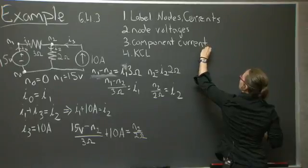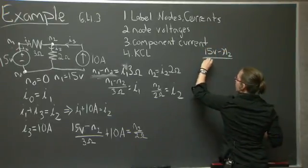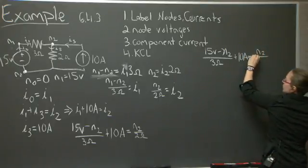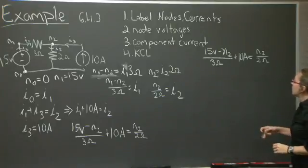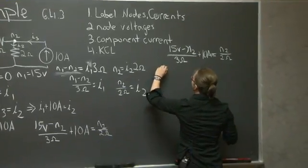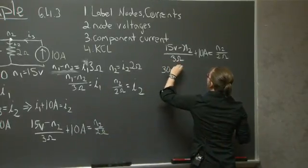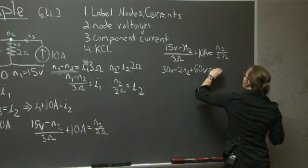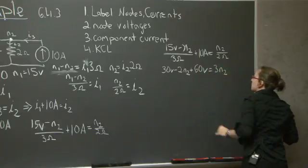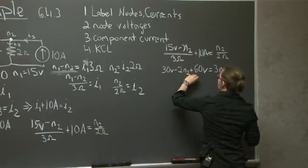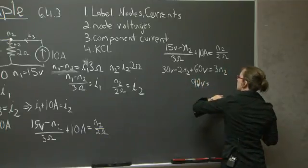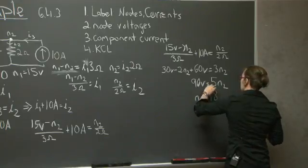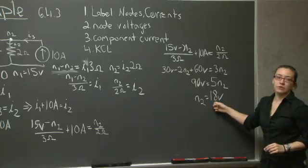So first I'm just going to copy this over. I'm going to multiply 3 by 6 ohms. And I've solved for the voltage associated with N2.